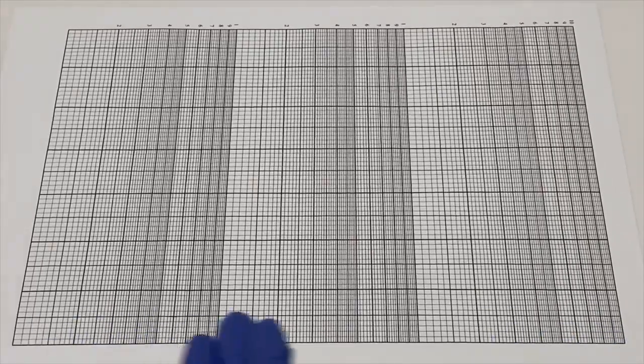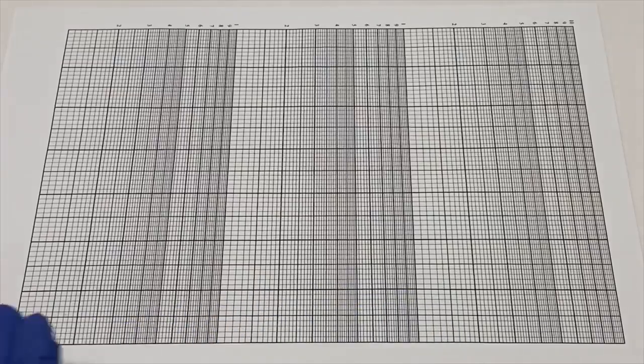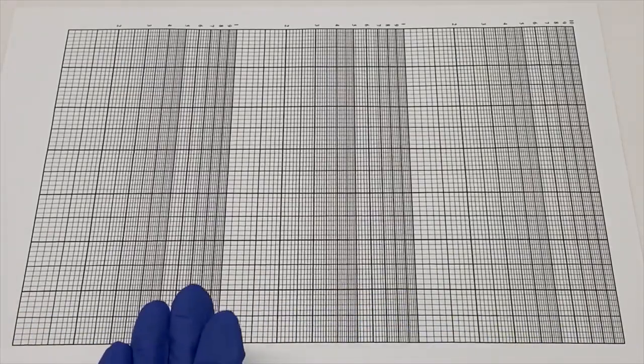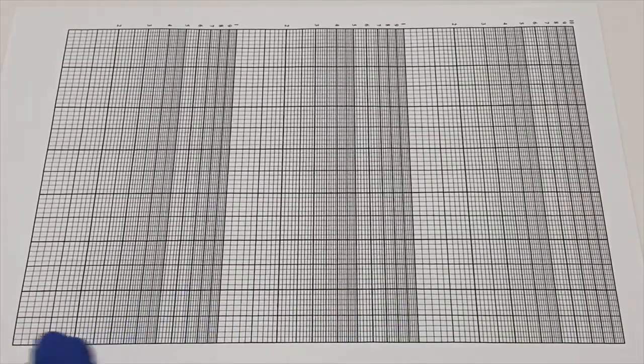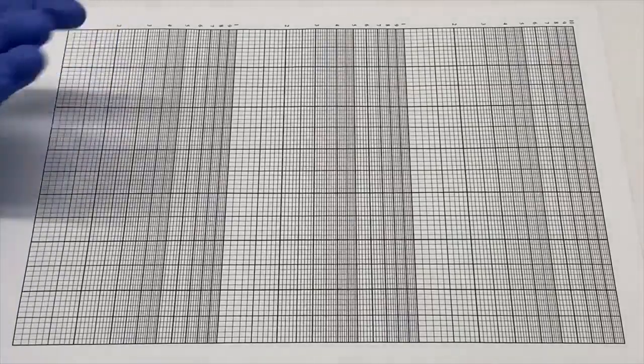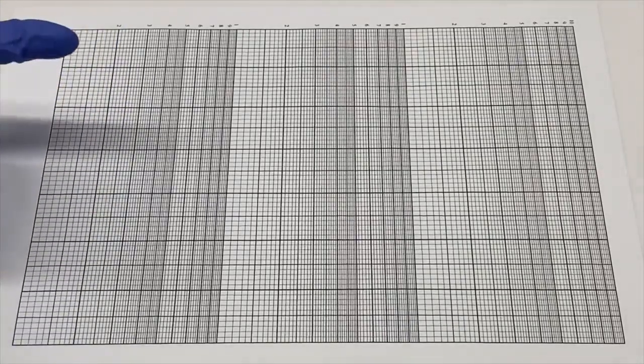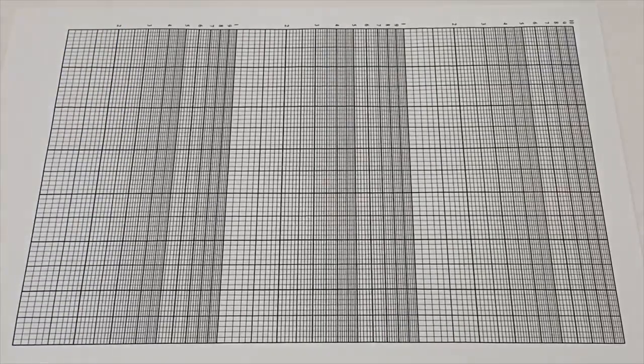On your x-axis, where you have your log scale, you'll be plotting the potassium chloride concentration, whereas on your y-axis, where you have your linear scale, you'll be plotting your membrane potential.